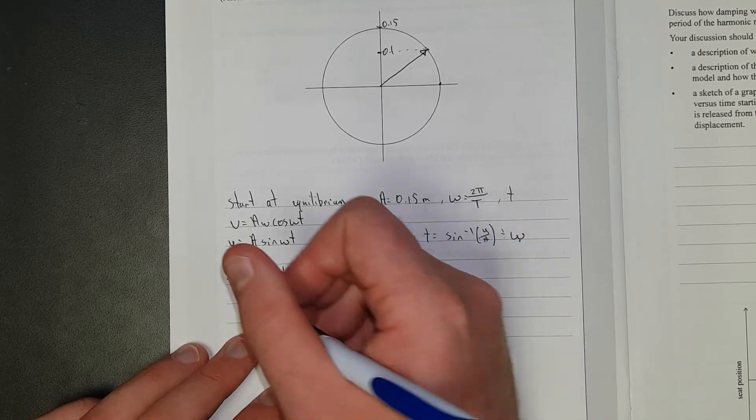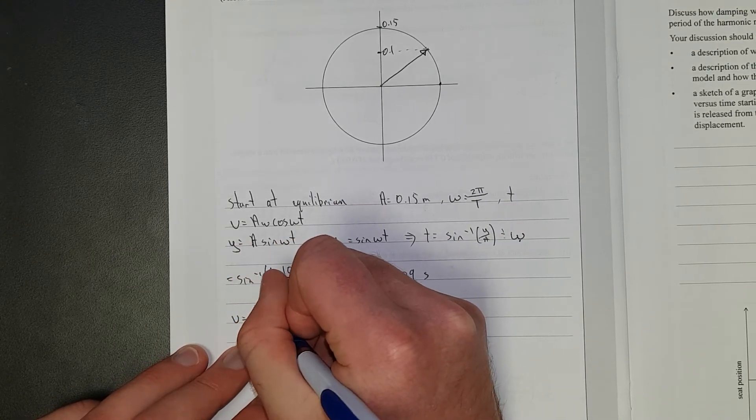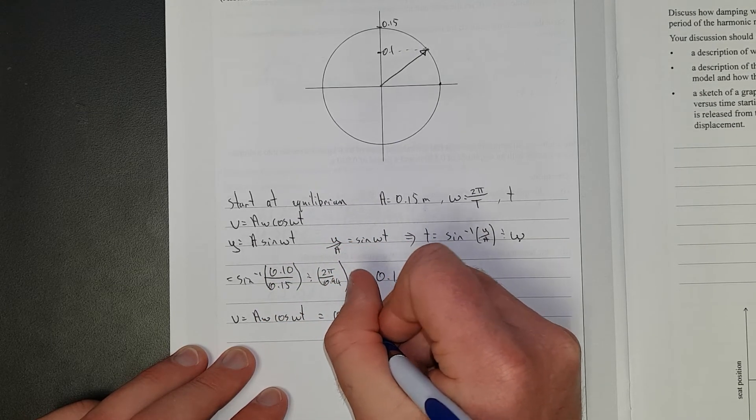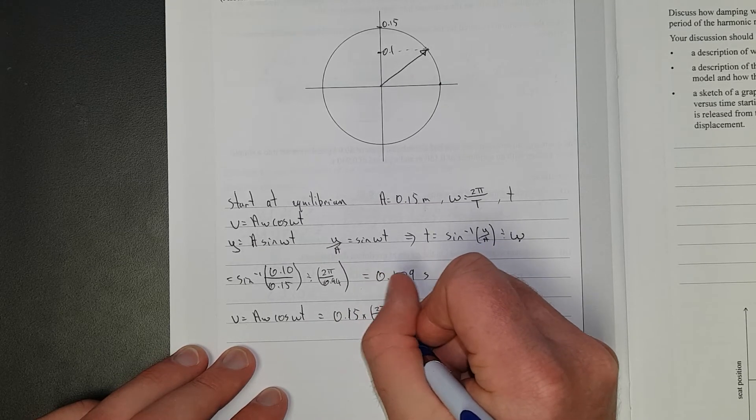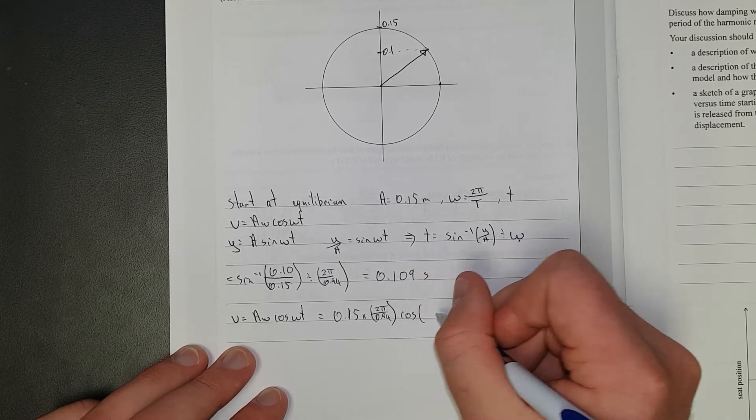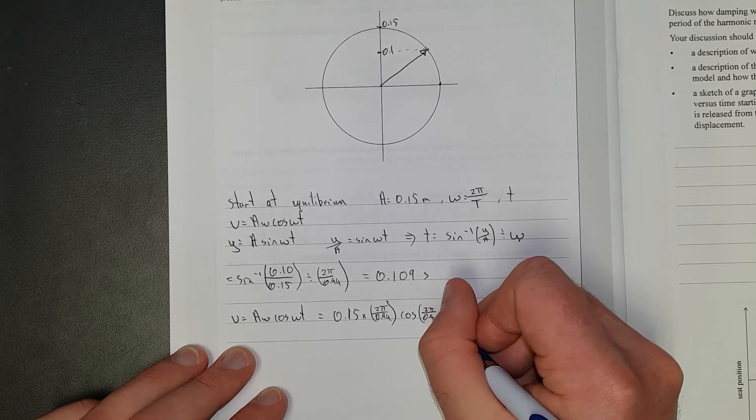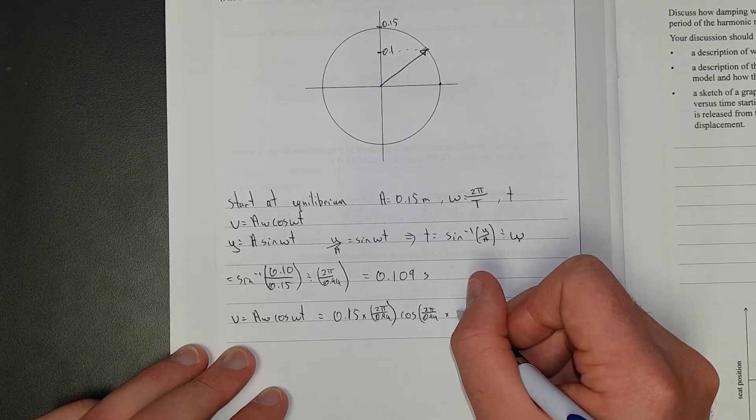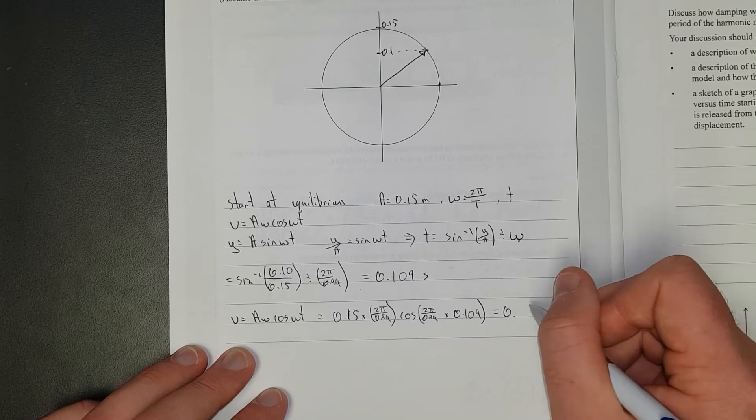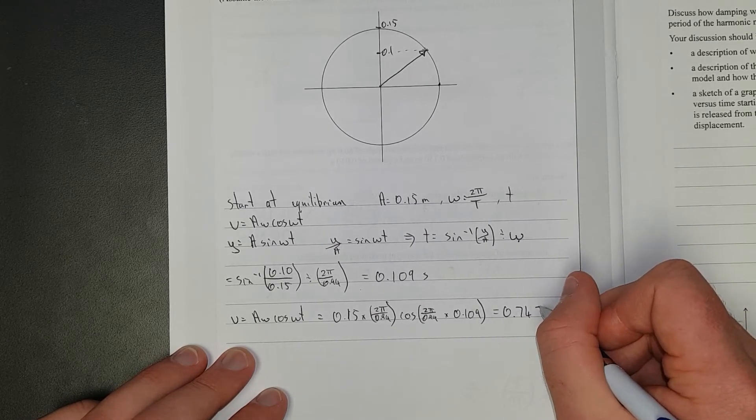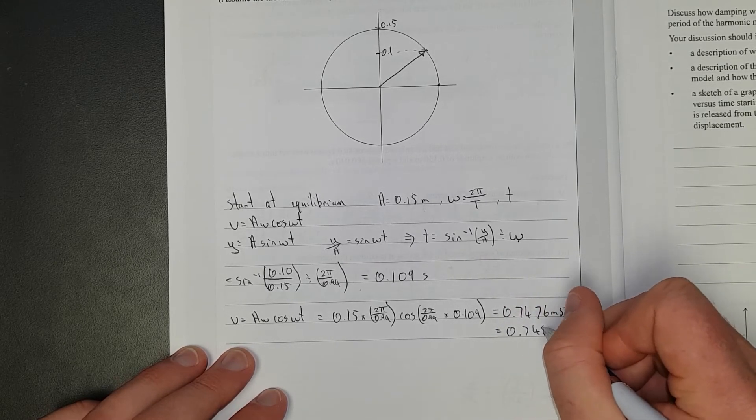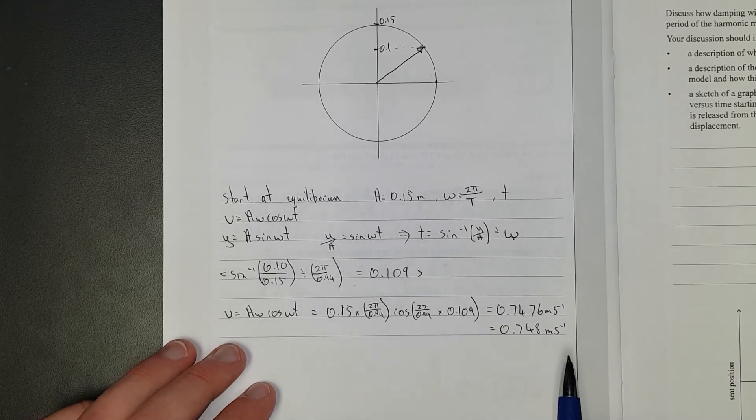Now we can substitute into our velocity formula: v equals A omega cos omega t. That's 0.15 times 2 pi over 0.94 times cos of 2 pi over 0.94 times 0.109. That gives me 0.7476 meters per second, basically 0.748 meters per second.